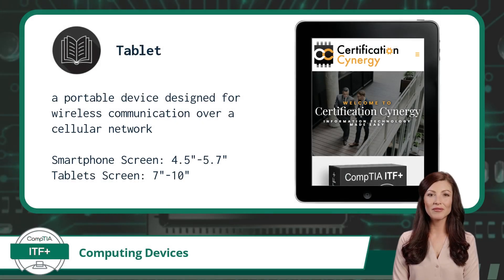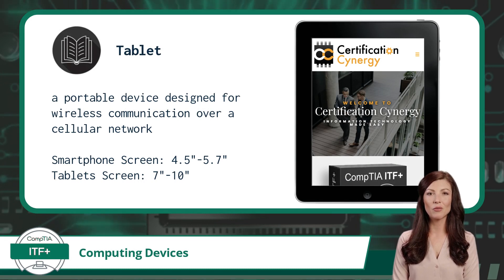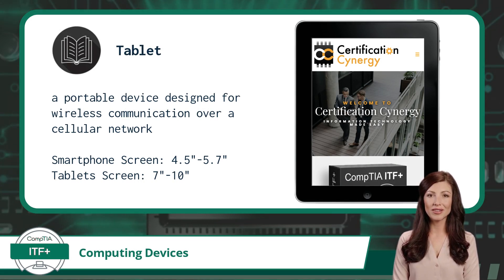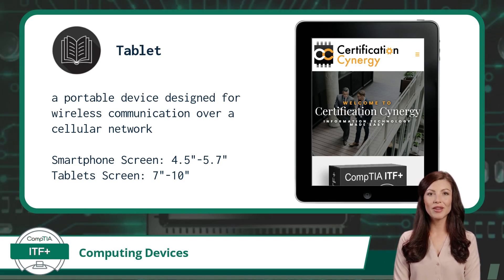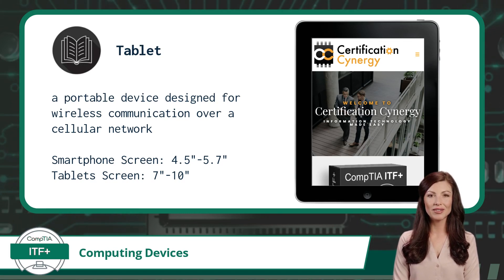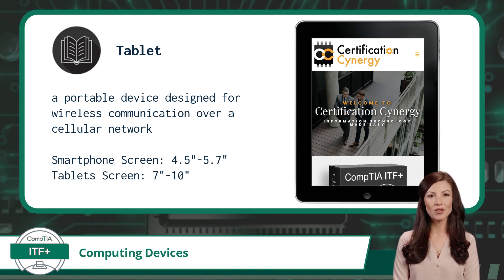Next we have tablets. A tablet can be defined the same as a mobile phone or smartphone. Just like a smartphone, tablets have internal antennas allowing them to connect to a cellular network. They utilize ARM processors and provide similar functionality. The main difference is the screen size. While a smartphone screen typically measures 4.5 to 5.7 inches, a tablet screen will measure 7 to 10 inches in size.